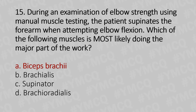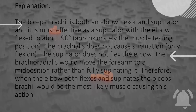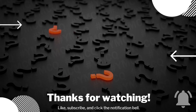The answer is Option A: biceps brachii. The biceps brachii is both an elbow flexor and supinator, and it is most effective as a supinator with the elbow flexed to approximately 90 degrees, which is the manual muscle testing position. The brachialis does not cause supination — only flexion. The supinator does not flex the elbow. The brachioradialis would move the forearm to a mid position rather than fully supinating it. Therefore, when the elbow both flexes and supinates, the biceps brachii would be the most likely muscle causing this action. That's all for today — check the description box for further clarification, leave your feedback in the comment box, and if you like this MCQ session, do subscribe to this channel for more videos. Thank you.